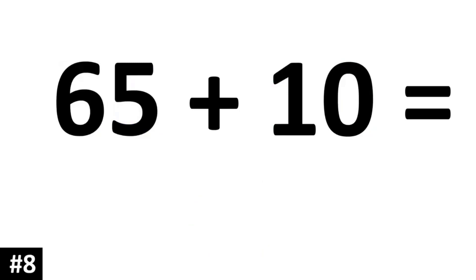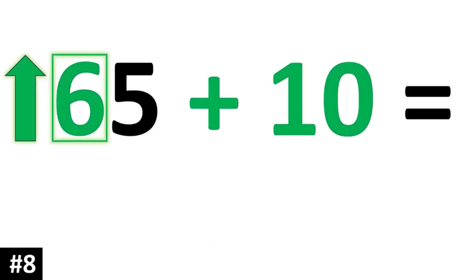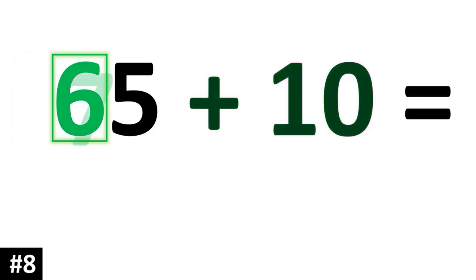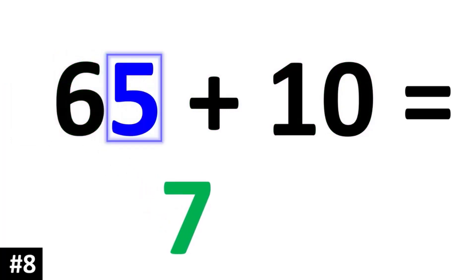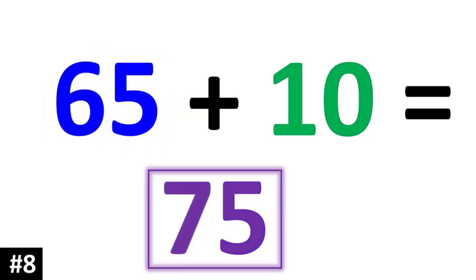How about 65 plus 10? 65 plus 10: this 6 is now going to become a 7. The 5 as the ones digit stays the same. So 65 plus 10 is 75.